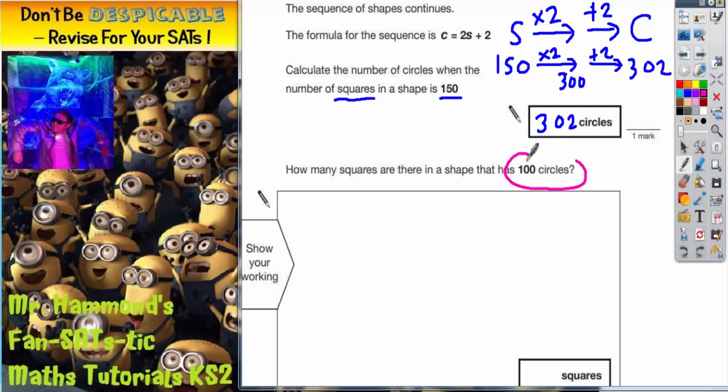Now this time we need to work in reverse, because on the first question we're told the number of squares and we need to get to the number of circles. But now we're told the number of circles and we're going to go backwards in reverse to the number of squares.